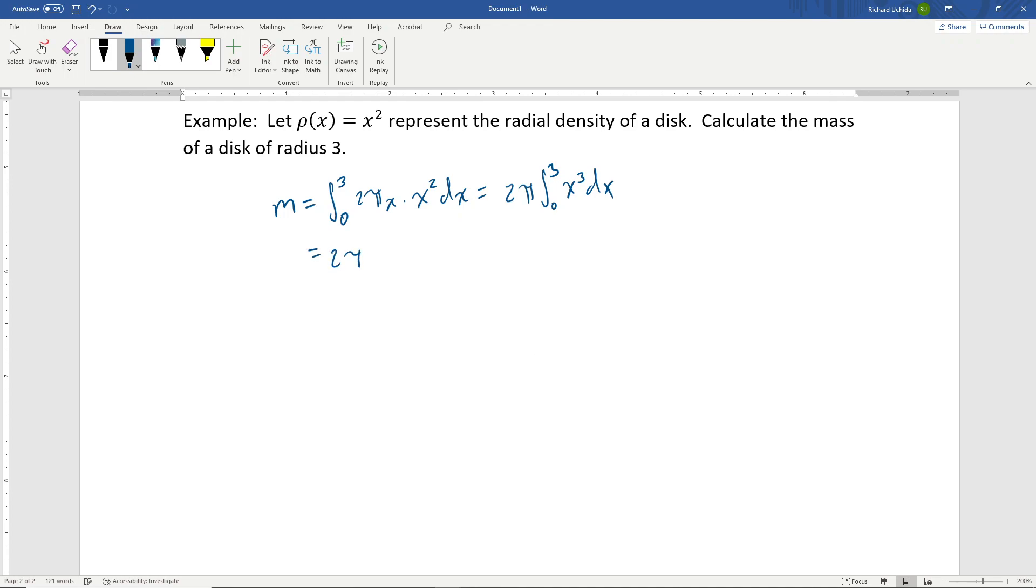That's 2π times the integral of x³, giving (1/4)x⁴ evaluated from 0 to 3. Plugging in 3 and multiplying 2 times 1/4, we get 81π/2 minus 0. So that's the mass of this circular disk working with this radial density function.